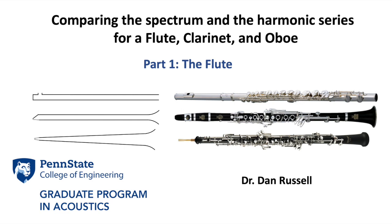Comparing the spectrum and the harmonic series for a flute, clarinet, and oboe. A flute, clarinet, and oboe are almost exactly the same length, but they do not at all sound anything alike. A flute is an open-open cylinder, a clarinet is a closed-open cylinder, and an oboe is a closed-open cone.